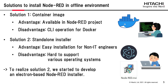To solve the problem, we considered two solutions. The first is the container image, which includes all of the components. The advantage is that the Node-RED project has published the official image, so we can easily create a custom container image from it. But some IT knowledge is required to utilize Docker environments. The second is the standalone installer. It is easy for non-IT engineers to install Node-RED, but in terms of open-source software development, it is hard to support various operating systems. To address this disadvantage, we used Electron and started developing the Node-RED installer.